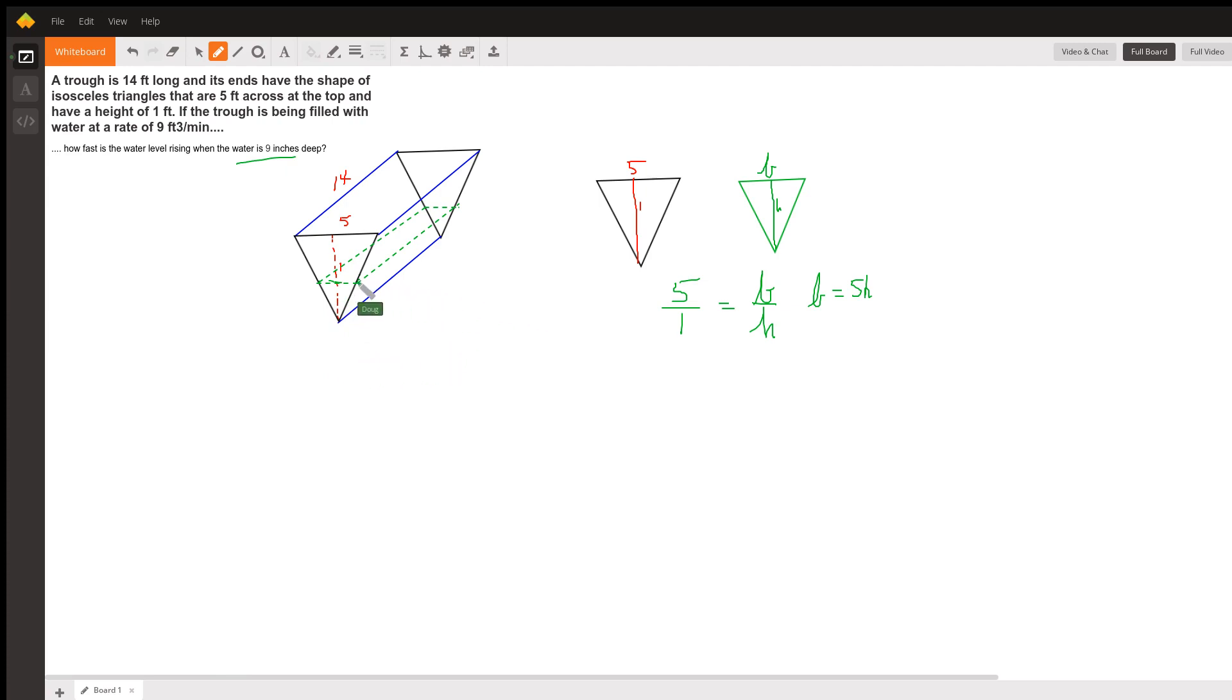and the key is that this green dotted line here kind of depicts a water level at a given point in time depending on this value h. So we want a formula for volume of the trough in terms of h or we could say v of h is the function that we're looking for.